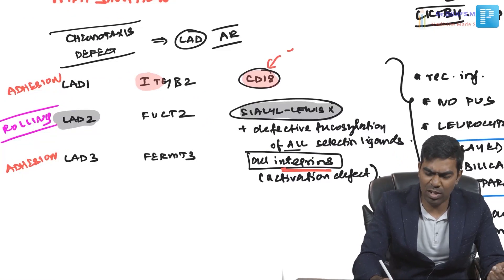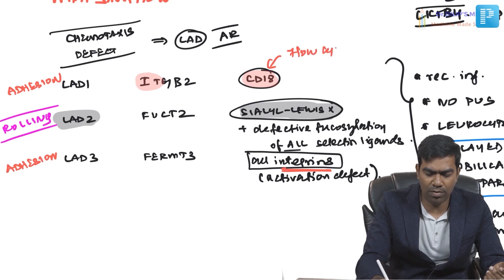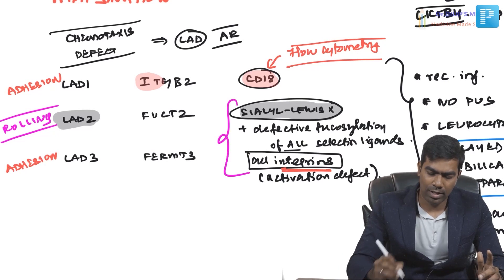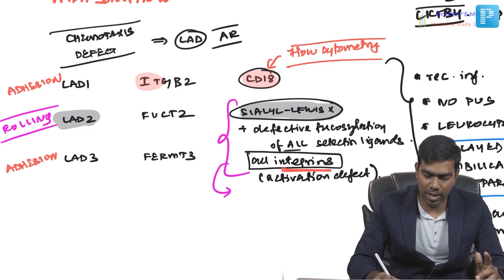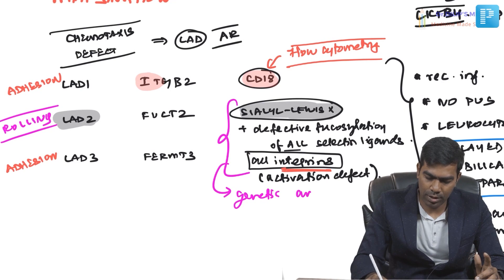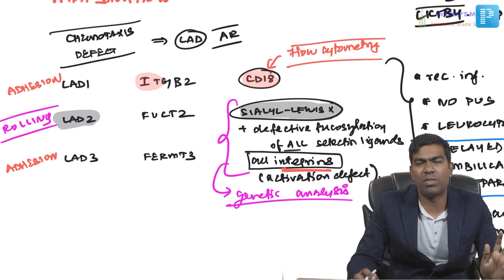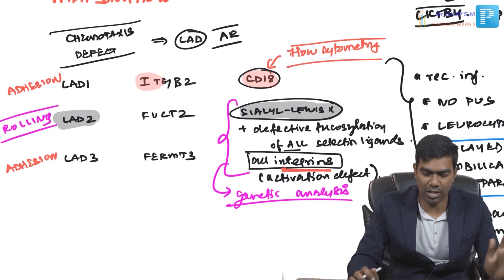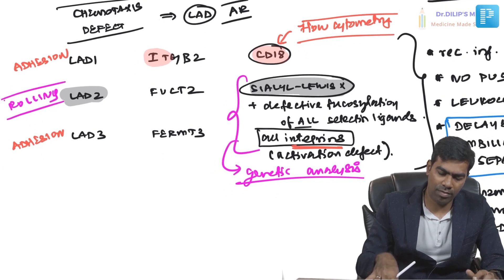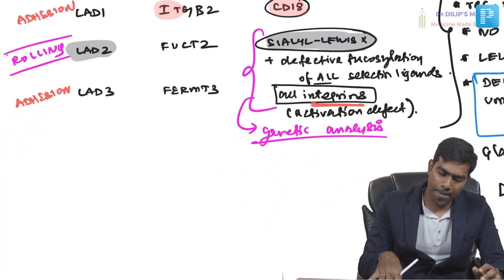LAD type 1 is diagnosed by flow cytometry, which detects defective CD18 on neutrophils — if CD18 levels are low, it is straightforwardly diagnosed as LAD type 1. LAD type 2 and LAD type 3 can only be detected by genetic analysis, and their incidence is very rare. The general treatment for all these defects is allogeneic stem cell transplant.